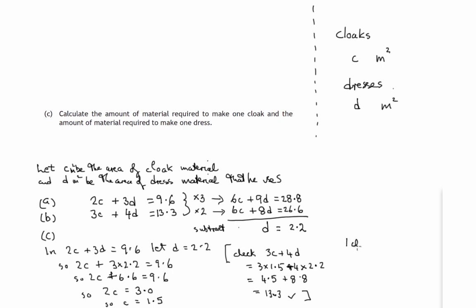One cloak requires 1.5 square meters of material. One dress requires 2.2 square meters of material.